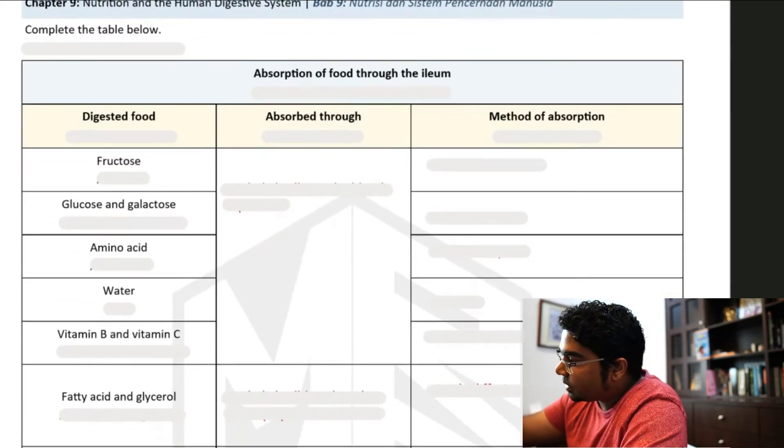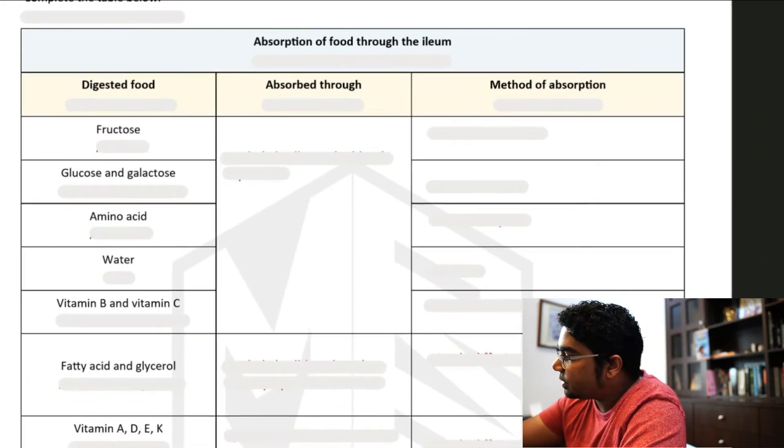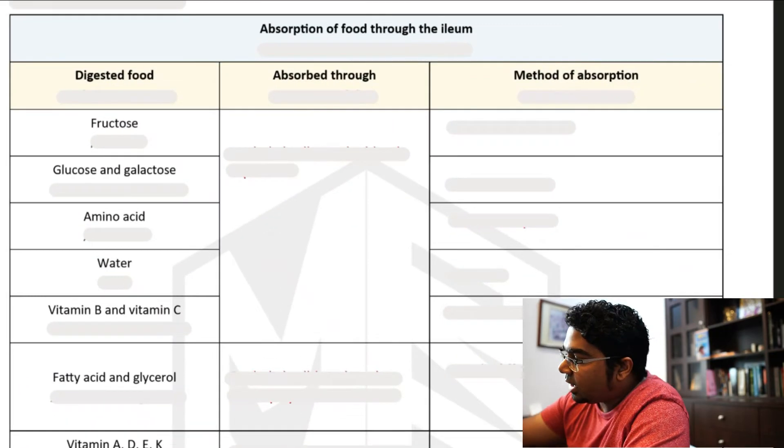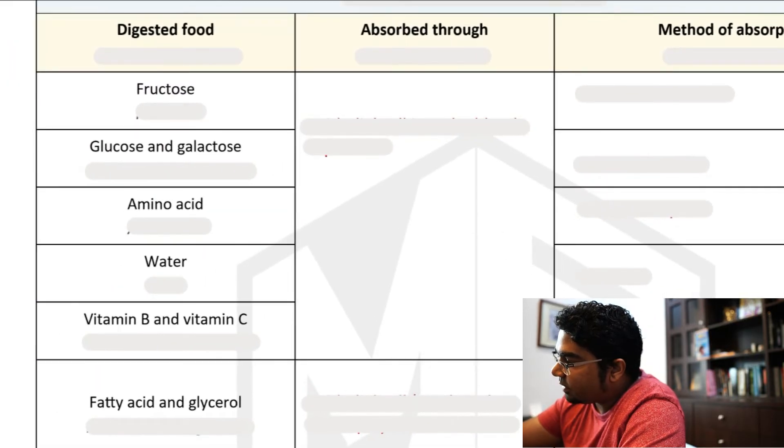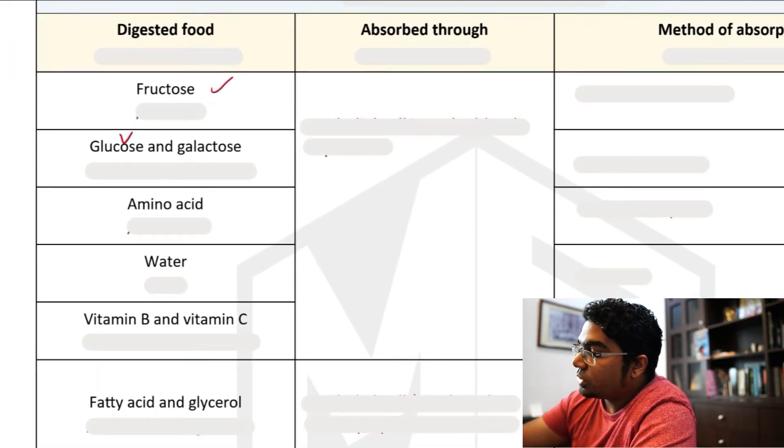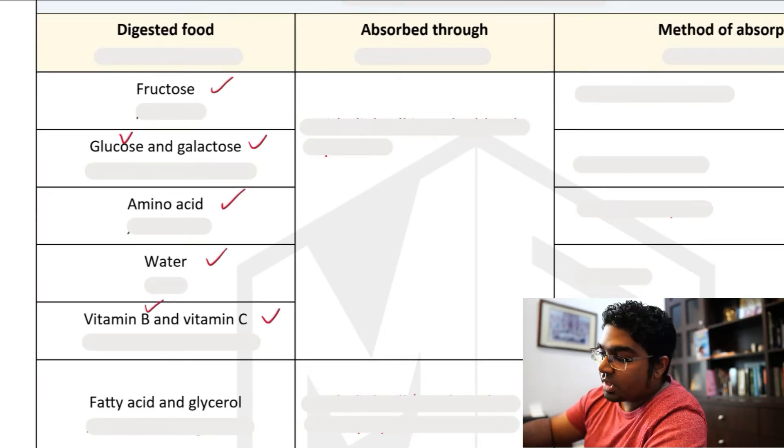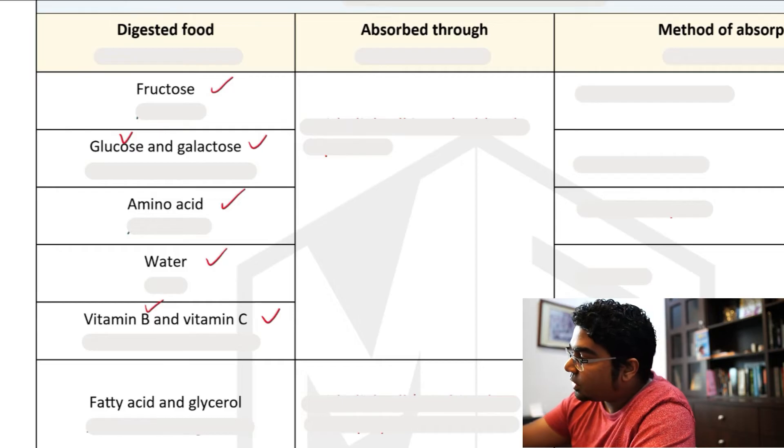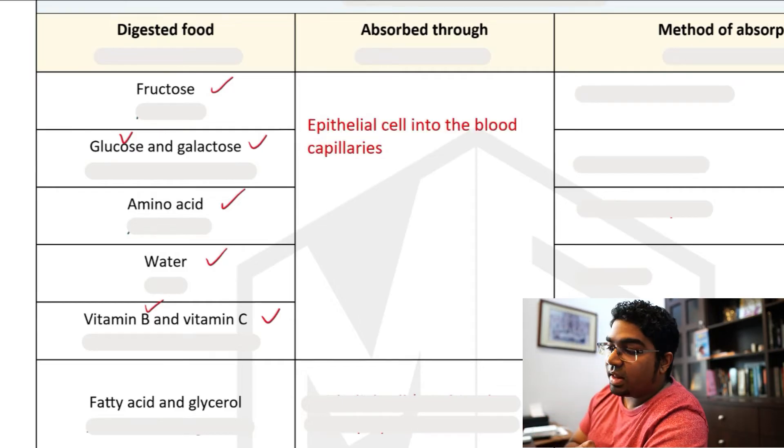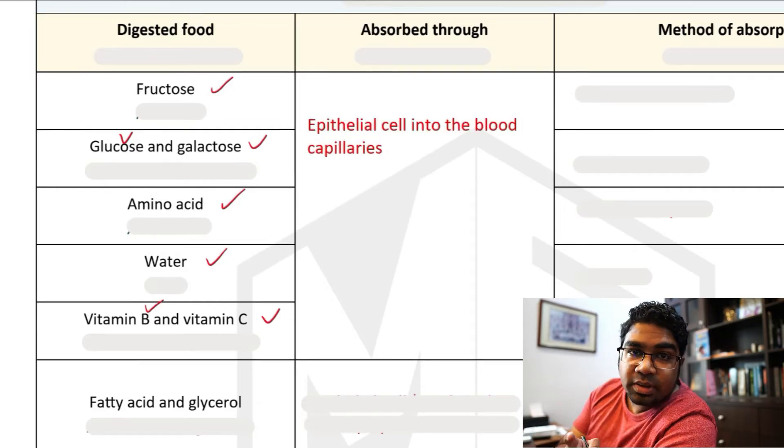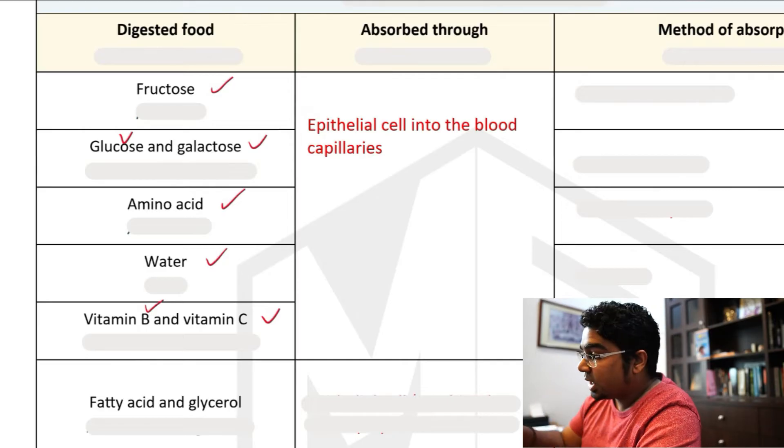And this is the adaptation of the villus. Now let's go into the actual absorption itself. So how is food absorbed through the ileum? Now I've grouped them here. We have fructose, glucose, galactose, amino acid, water, vitamin B, and vitamin C.